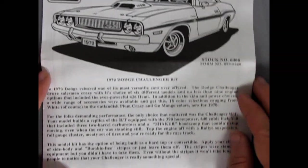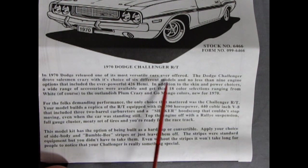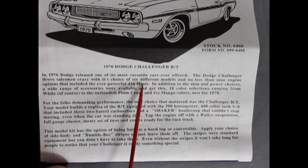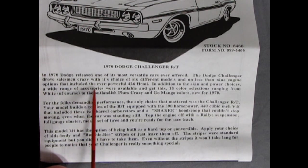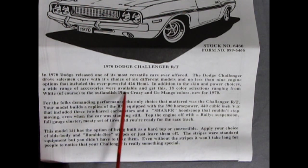But down here we get, of course, our great write-up for the kit. In 70, Dodge released one of its most versatile cars ever offered. The Dodge Challenger drove salesmen crazy with its choice of six different models and no less than nine engine options that included the ever-powerful 426 Hemi. In addition to the skin and power choices, a wide range of accessories were available.